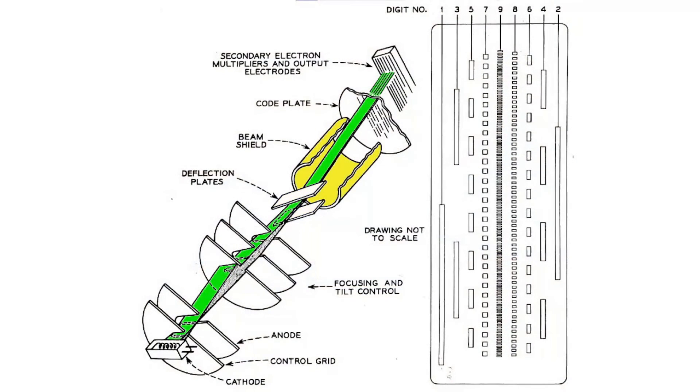On leaving the deflection plates, the electron beam travels through a beam shield in order to isolate the beam from any distorting external electrostatic forces. The code plate is perforated with nine vertical columns of apertures. The pattern of apertures in each column represents a digit position in a nine-digit gray code.